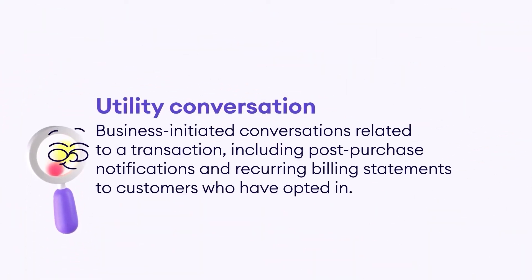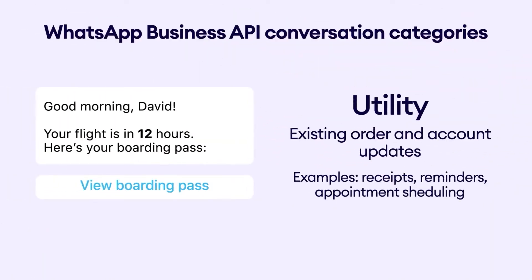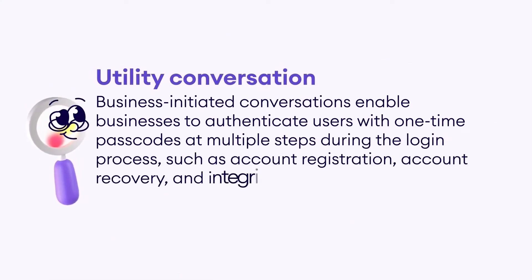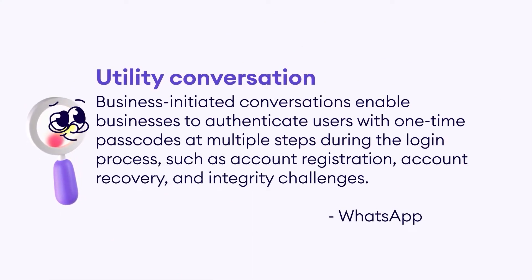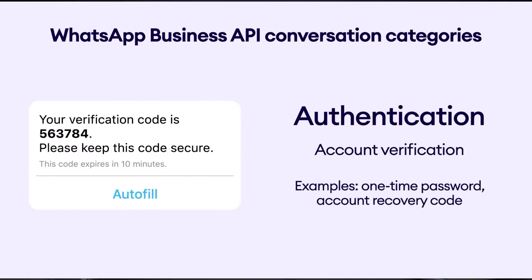WhatsApp defines utility conversations as business-initiated conversations related to a transaction, including post-purchase notifications and recurring billing statements to customers who have opted in. The last category is authentication — business-initiated conversations that enable businesses to authenticate users with one-time passcodes at multiple steps during the login process, such as account registration, account recovery, and integrity challenges. An authentication conversation starts when you send a customer a message containing a one-time security code, or when a customer is creating an account or has issues logging in.